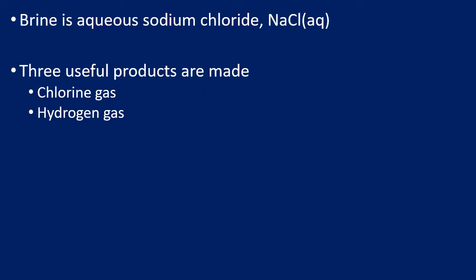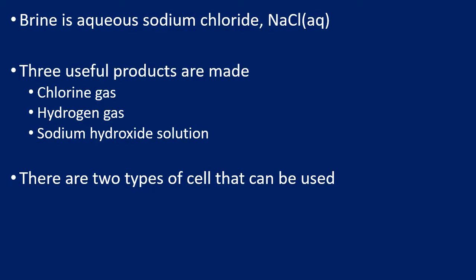We make chlorine gas, hydrogen gas, and sodium hydroxide solution. Chlorine gas is used an awful lot in detergents and cleaning products. Hydrogen gas can be used as a fuel in fuel cells. Sodium hydroxide has cleaning properties and can be used to produce bleach and other cleaning products. There are two main types of cell: the diaphragm cell and the membrane cell.